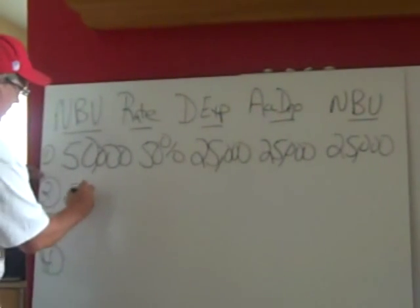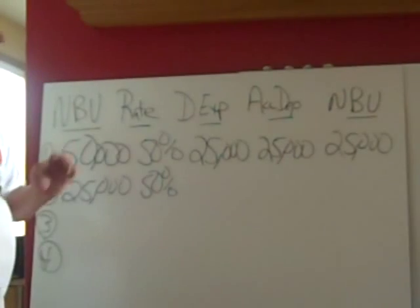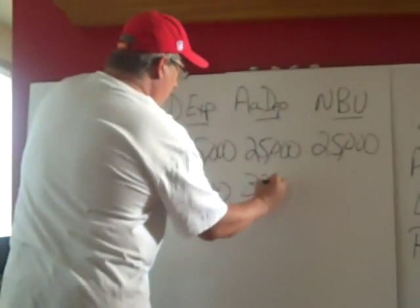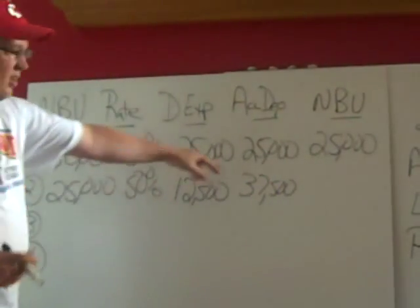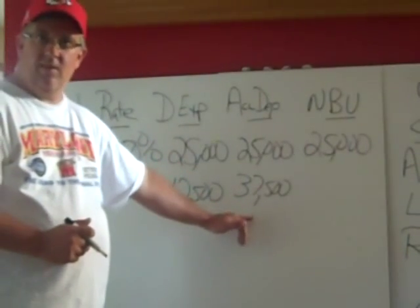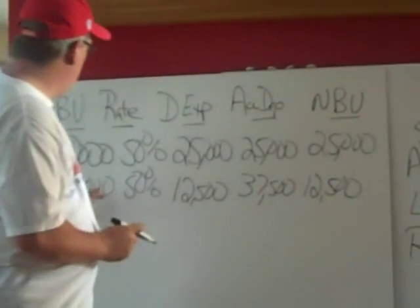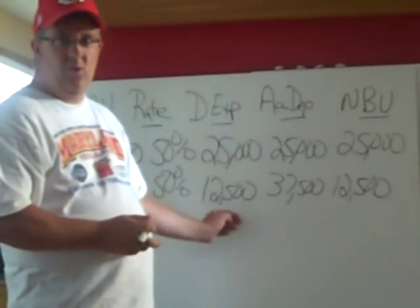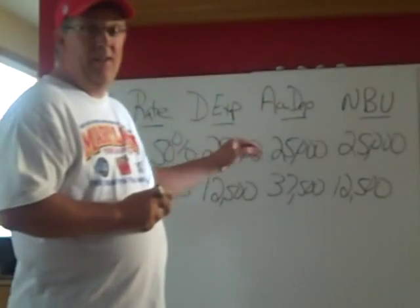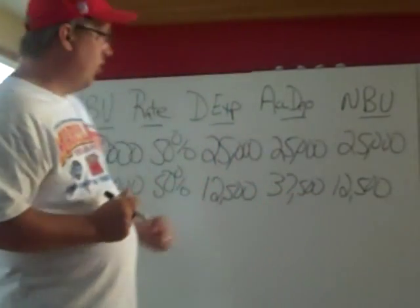Year two, we start with our ending net book value of $25,000. Our rate remains the same at 50%, so this year our depreciation expense is $12,500. Our accumulated depreciation is $37,500 because we added our beginning accumulated depreciation of $25,000 plus our depreciation expense for year two of $12,500. Our ending net book value is $12,500. If we were doing straight line, each year depreciation expense would have been $10,000, so our total taken on straight line was $20,000; under double declining balance it's $37,500.